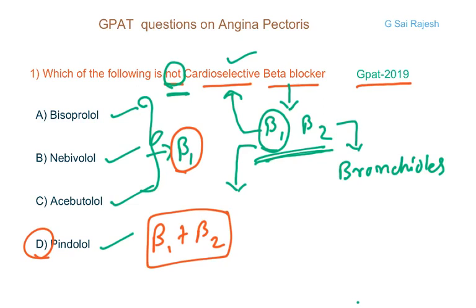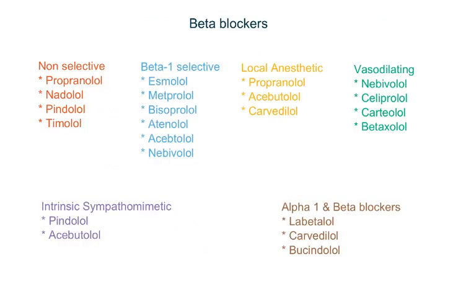There is an exhaustive list on various types of beta blockers with their activity. There are numerous questions on beta blockers, so it is required to understand all these agents. The first category is non-selective beta blockers — they block both beta1 and beta2 receptors. In this group you have propranolol, nadolol, pindolol, and timolol.